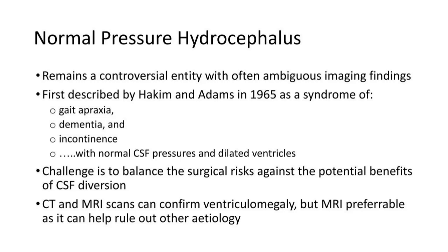Normal pressure hydrocephalus was first described in the 1960s as a triad of gait apraxia, cognitive decline and dementia, and incontinence — and as the syndrome name suggests, should have normal CSF pressures in the context of dilated ventricles.